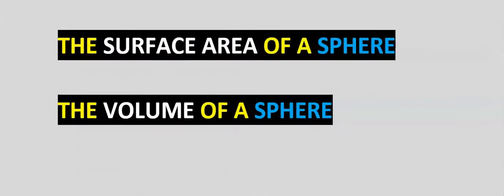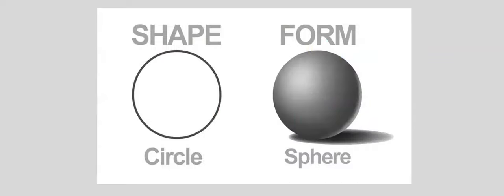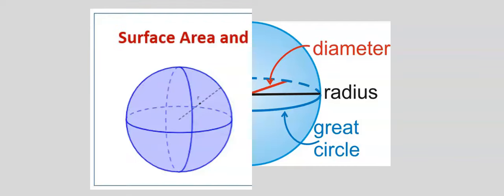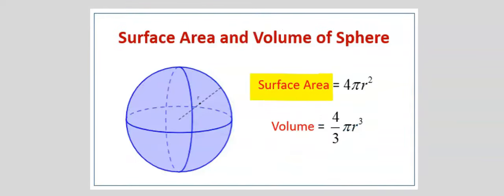Next, let's consider how to calculate the surface area and the volume of a sphere. A sphere is simply a circle converted to a three-dimensional shape, and it still has a diameter and a radius. The formula for the surface area of a sphere is 4 pi r squared, and the volume of a sphere is 4 divided by 3 multiplied by pi multiplied by r to the power of 3. To calculate either, we need the radius.